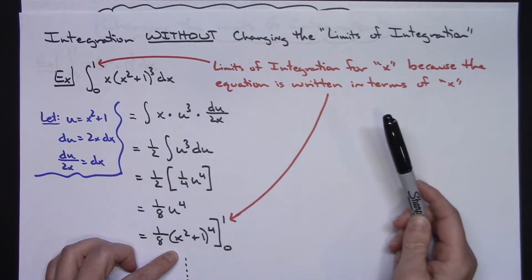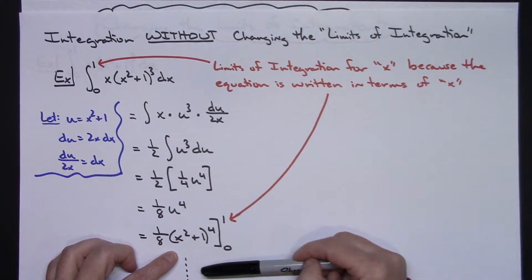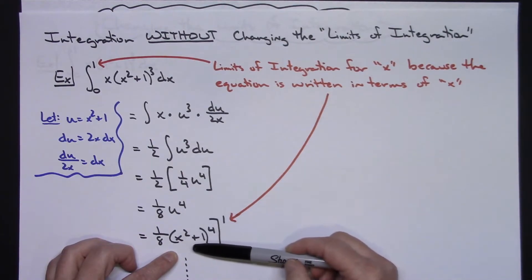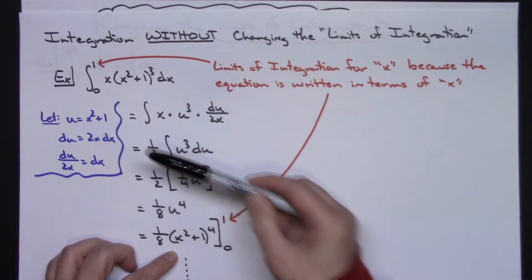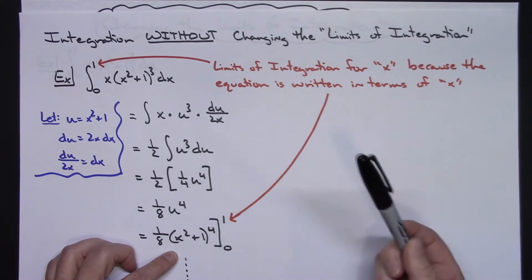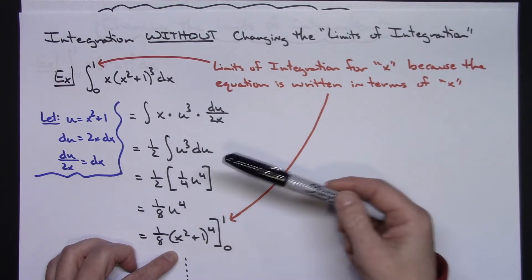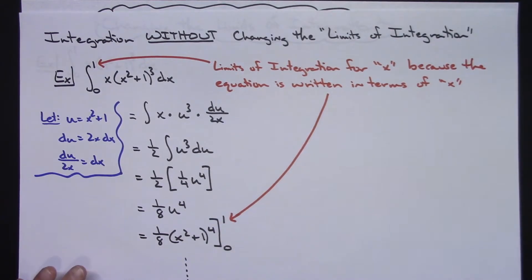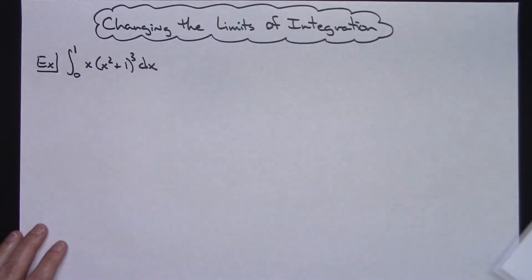As soon as you start changing it, you no longer have that. And this does make for a really long problem. And by the time you get back down to here, depending on what you let u be, this could be a pretty complicated expression to be able to plug those numbers back in. So sometimes it just makes more sense to change those limits of integration to limits of integration for u so that we can do it earlier in the problem. And that's what we're going to work on in this one right here.